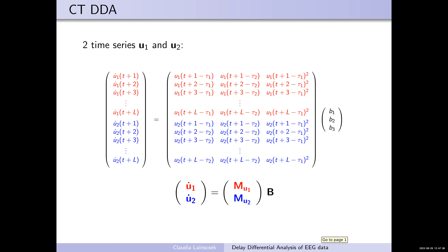Can you comment on how you choose tau1 and tau2? That will come. So I can do this for two, three, or more time series to compute the coefficients. The advantage is I have more data in one step instead of taking single trial DDA and then taking the mean. But of course there are limitations and I will get to those as well.